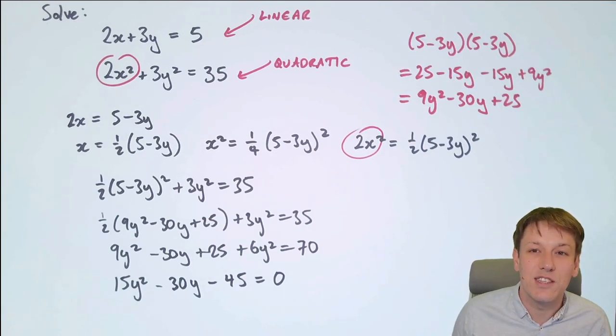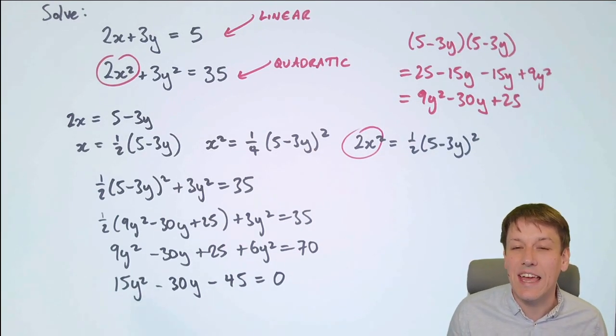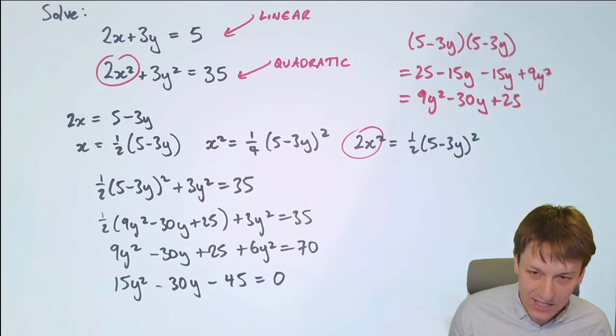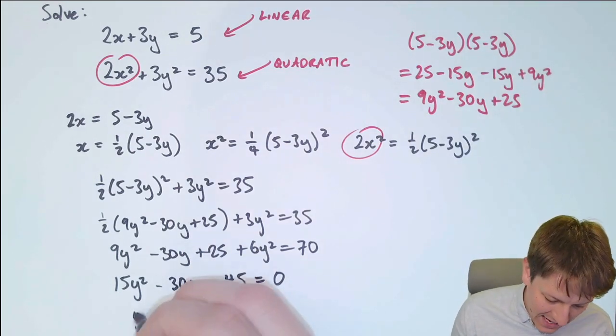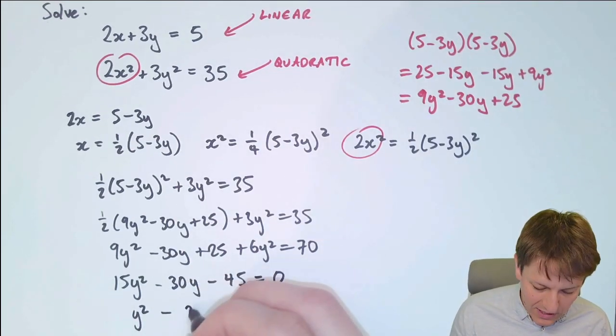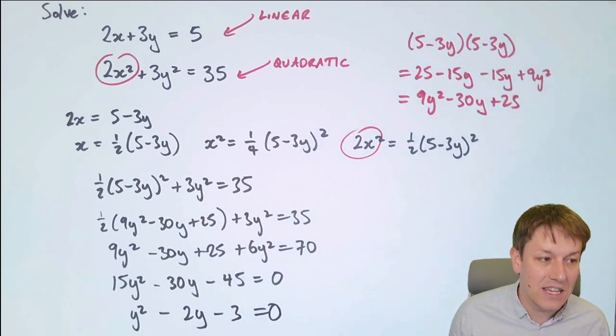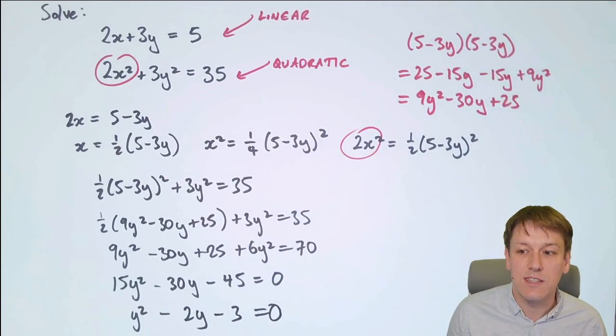Before we try to factorise this equation, you really would want to notice that everything is a multiple of 15, so we can divide both sides by 15, and we would get y squared minus 2y minus 3 equals 0, which makes things a lot easier.